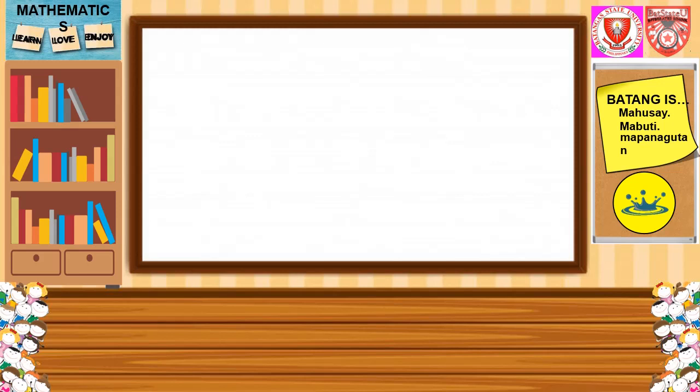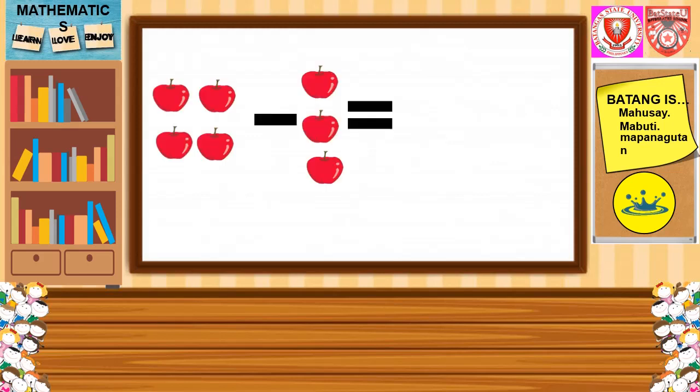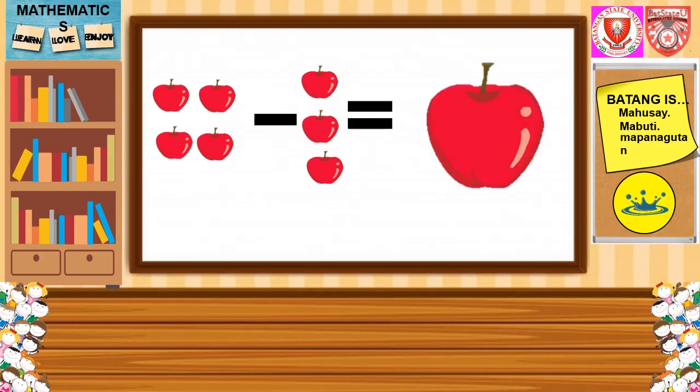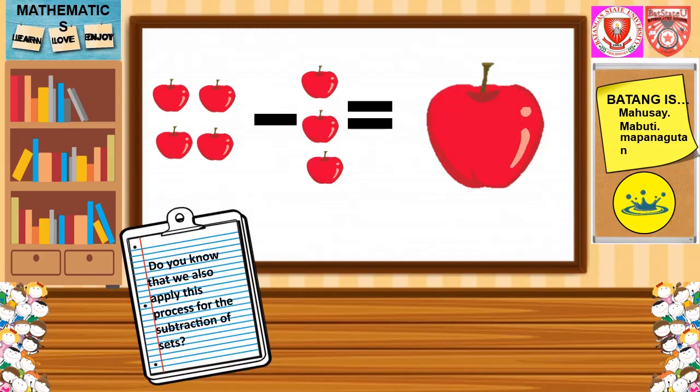Let us recall the operation on real numbers. How do we explain the process of subtraction? If I tell you that I have 4 apples and I subtracted 3 apples, this just means that I took away or removed 3 apples from my current 4 apples. Then the answer, which is called the difference, means what is left with me is 1 apple.